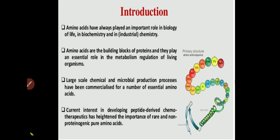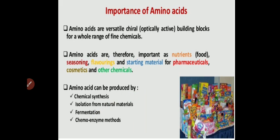The large-scale production of amino acids can be carried out by using different kinds of chemicals or microorganisms. There is great interest in peptide derivatives and chemotherapeutics, which has increased the importance of non-proteinogenic pure amino acids. These amino acids can be produced by various methods like chemical synthesis, isolation from natural materials, fermentation, or chemo-enzyme methods, and are very important as nutrients and flavoring agents or starting materials for various pharmaceutical, cosmetic, and other chemical productions.